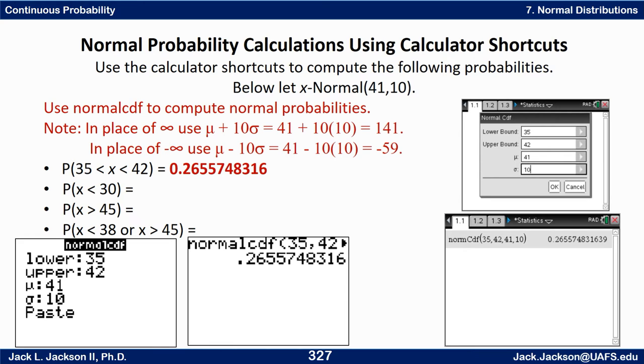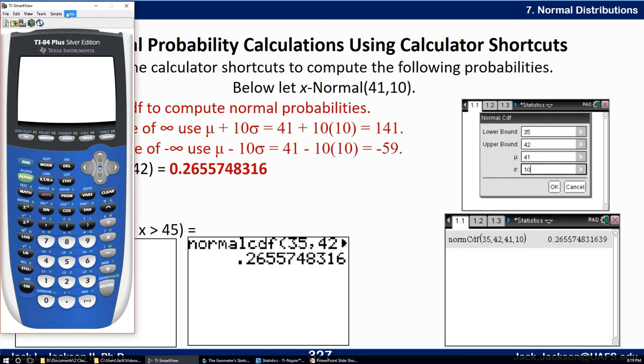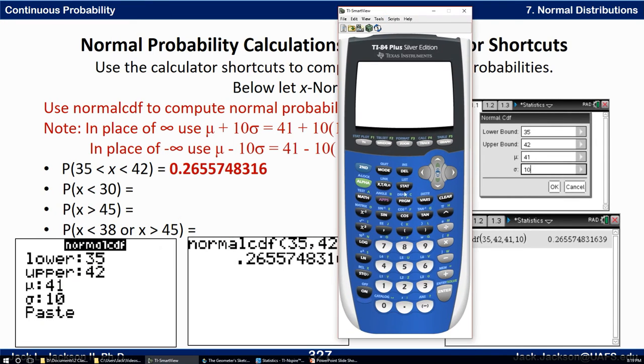Similarly it works over here, so let me do one for you and then I'll just show you the screens on the rest with the answers. You don't have to do anything in Y1 or anything. You just go to the home screen, go to distribution, go second variables for distribution. If we want to do probabilities we want number two for normal distribution, so we always use the CDF for probabilities.